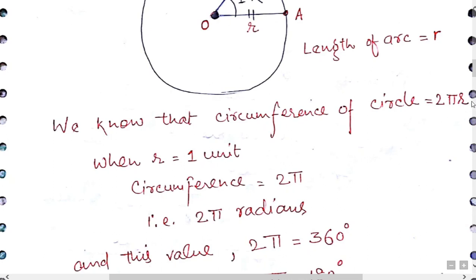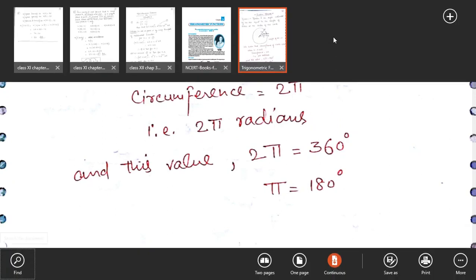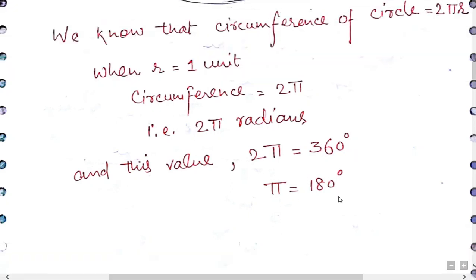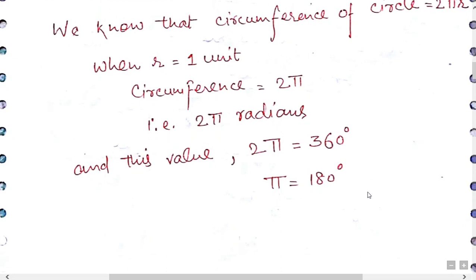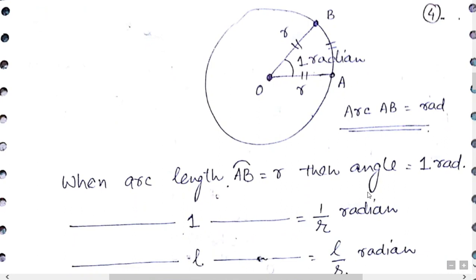We know that the circumference of a circle is 2πr. If r is 1 unit, then the circumference is 2π. Since this circumference is in radians and corresponds to 360 degrees, it means π equals 180 degrees. Now, one more derivation: θ = l/r, where θ is the angle made by an arc at the center, l is the arc length, and r is the radius. When arc AB equals the radius, this angle is 1 radian.